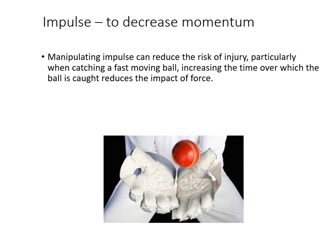We can also use impulse to decrease momentum rather than increase it. The best example is a cricket wicket keeper, who reaches out to take the ball and brings it back in line with the hips — giving with the ball. This decreases the risk of injury and increases the chance of catching the ball rather than having it pop out. By applying force over a longer period of time — reaching forward and bringing it back to the midline — we decrease impulse and equally decrease momentum.